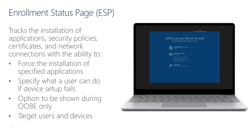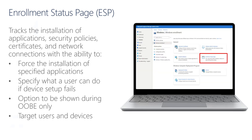During the device evaluation phase, it completes the MDM enrollment and evaluates policies and apps that are targeted to the device, which is covered under the device preparation and device setup steps of the process. During the user evaluation phase, it tracks any policies and apps that are targeted to the end user before it gets to the desktop under the account setup step. The ESP can be configured in the Microsoft Endpoint Manager under the Windows Enrollment section. Under Enrollment Status page, the default policy applies to all users, but custom policies can be targeted to both users and devices.